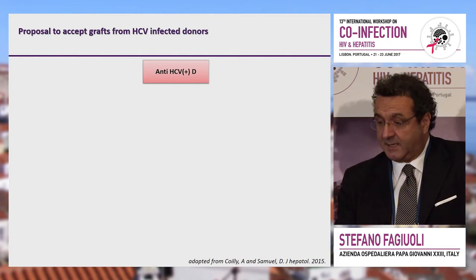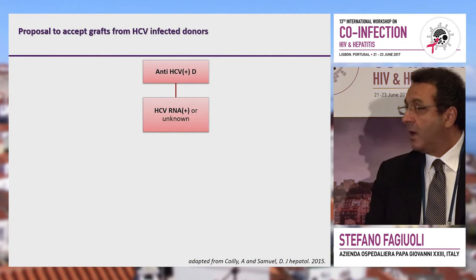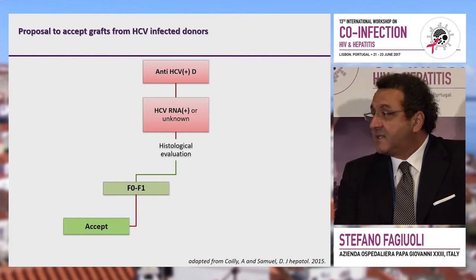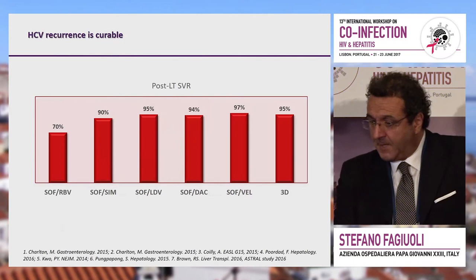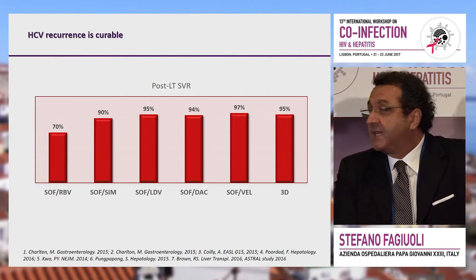There is a simple proposal from the ILTS — a modified proposal from Professor Samuel. If you have an anti-HCV positive donor, regardless of whether HCV RNA is known, do a biopsy. If fibrosis is less than F2, you can accept the organ. If fibrosis is greater than or equal to F2, you do not accept the organ. It is very simple — anyone can do it, even a pathologist.